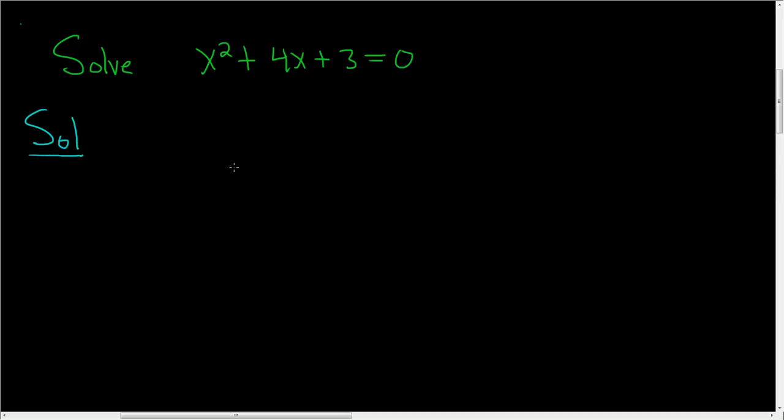There's a couple ways to do this, but what you should always try first is to factor. So in order to factor this, we know that if it does factor, it's probably going to look like this: x and then x, and this is equal to 0.